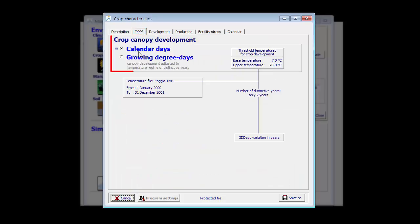The crop canopy development is now expressed in calendar days. By selecting this radio button, growing degree days, my calendar days are automatically converted into growing degree days.